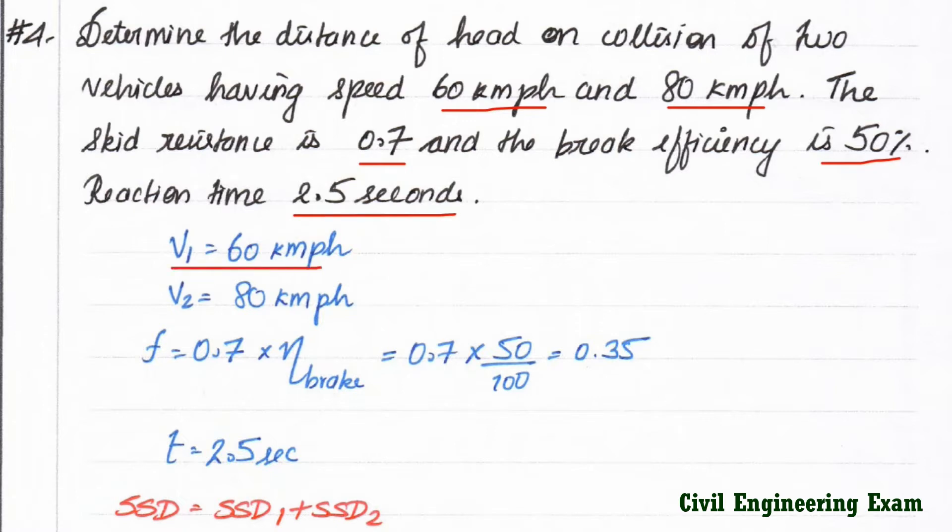Now the given value is V1 is equal to 60 km per hour and V2 is equal to 80 km per hour.